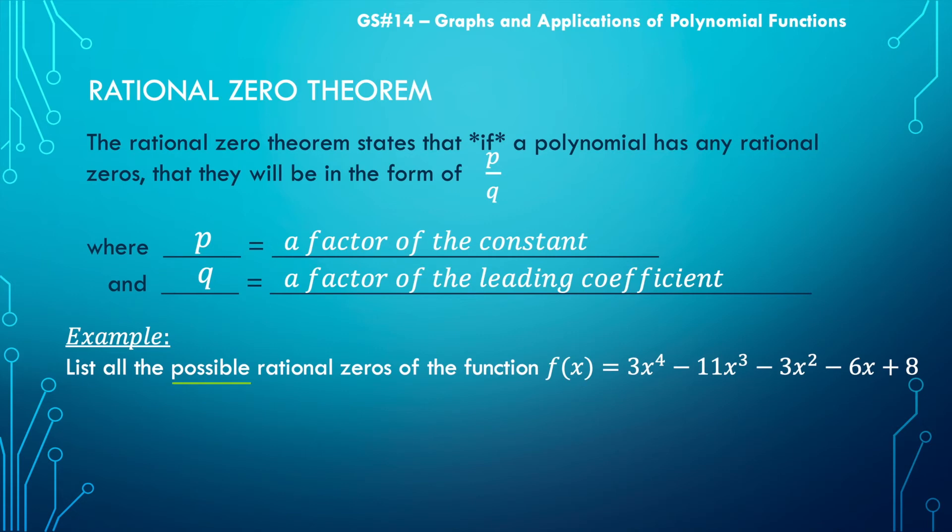So what we're going to do is we're going to take this theorem and use it to express every single possibility. We're not saying that the possibilities are zeros. We're saying these are what they could possibly be. We're going to use that p over q idea where p is a factor of the constant, and in this case, the constant is the value eight. And q is a factor of the leading coefficient, and the leading coefficient here is three. So we're looking at the factors of eight divided by the factors of three.